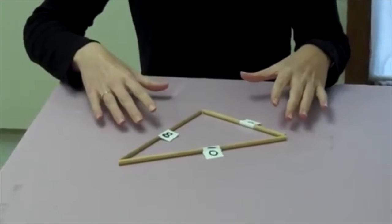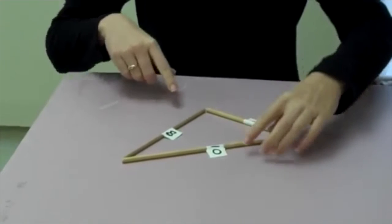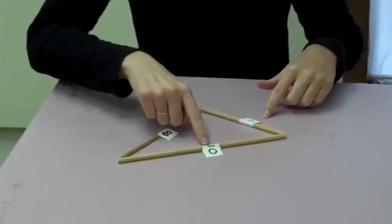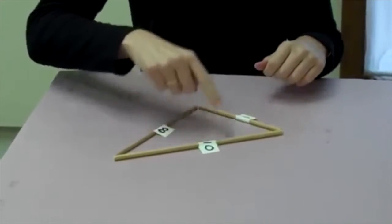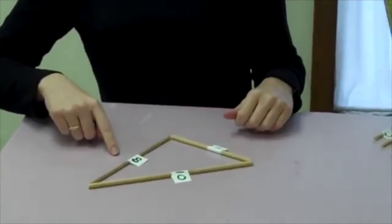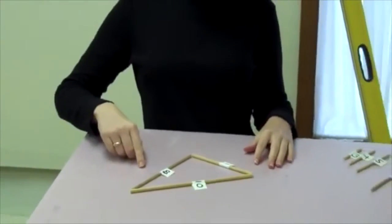The principle is that the sum of two sides always has to be greater than the measure of the third. So here I have six and eight, well that's greater than ten. Eight and ten is greater than six. Ten and six is greater than eight. So these three sizes, six, eight, and ten, are going to work for a triangle.